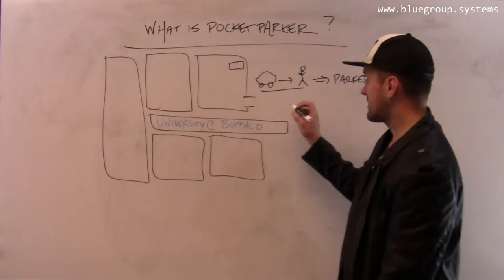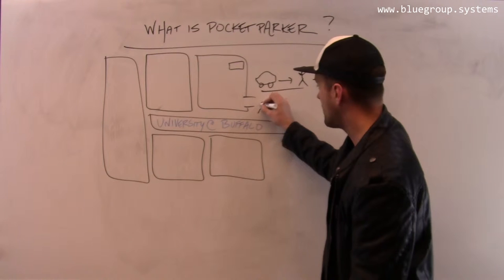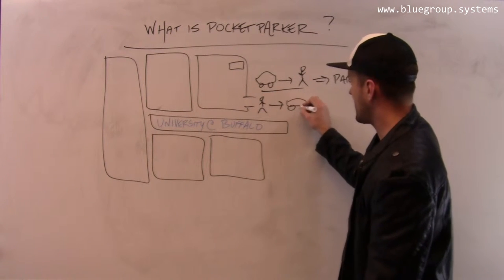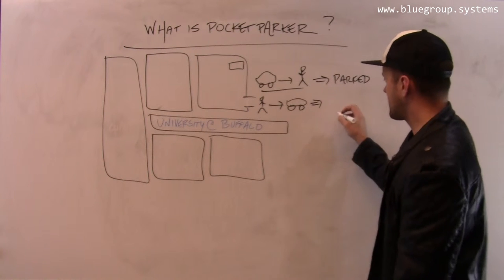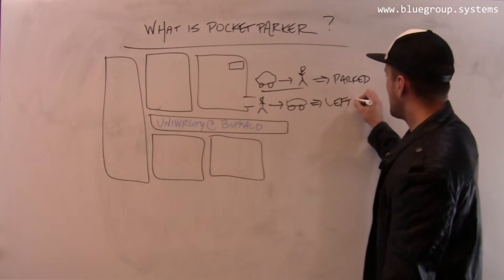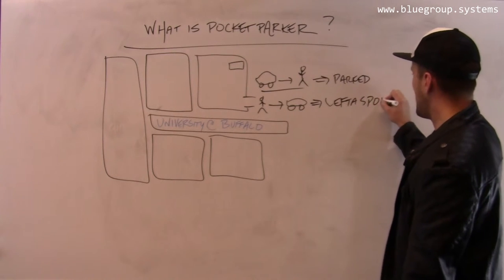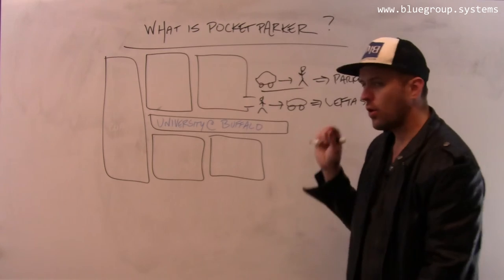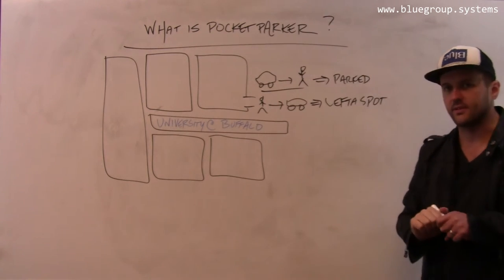On the other hand, when somebody goes from the other direction, from walking to driving, then I assume this is de-parking or they left a spot. And now there is an additional spot in this lot. And this was the core observation that allowed us to build this system.